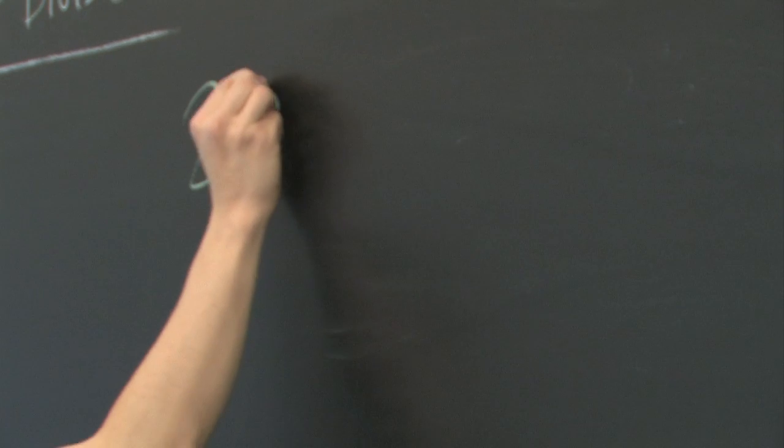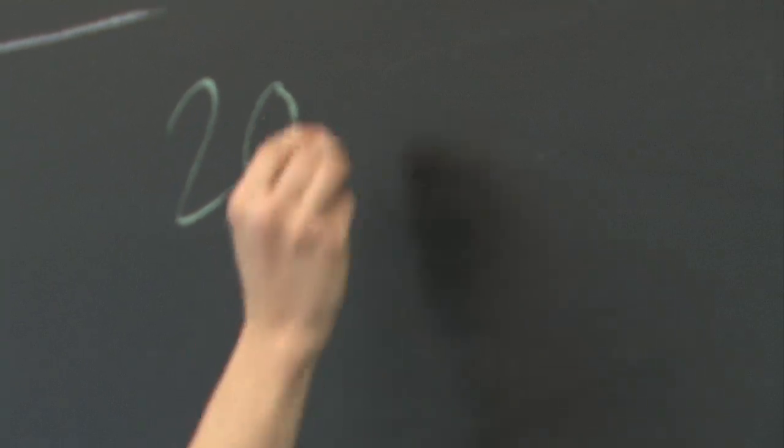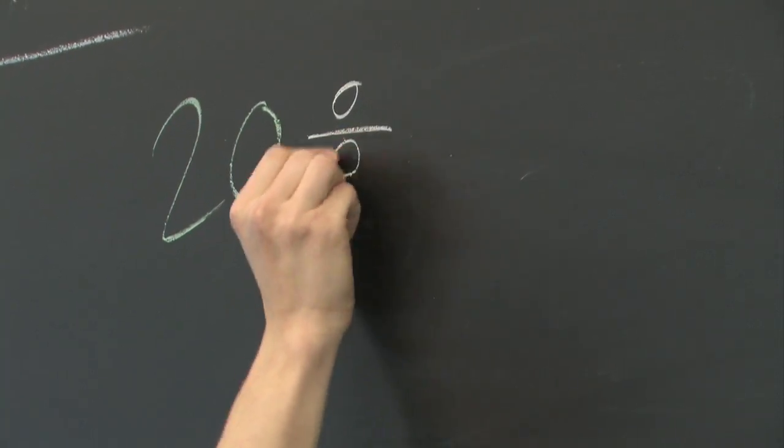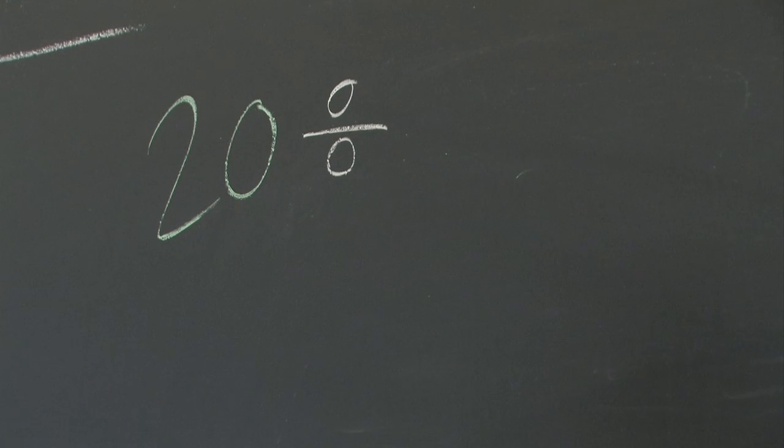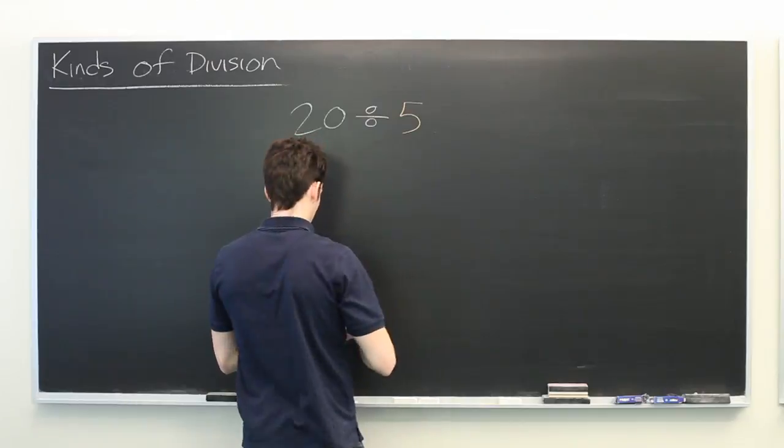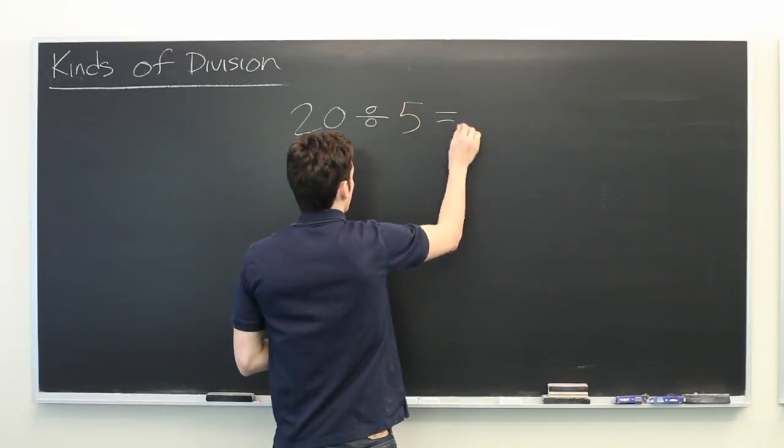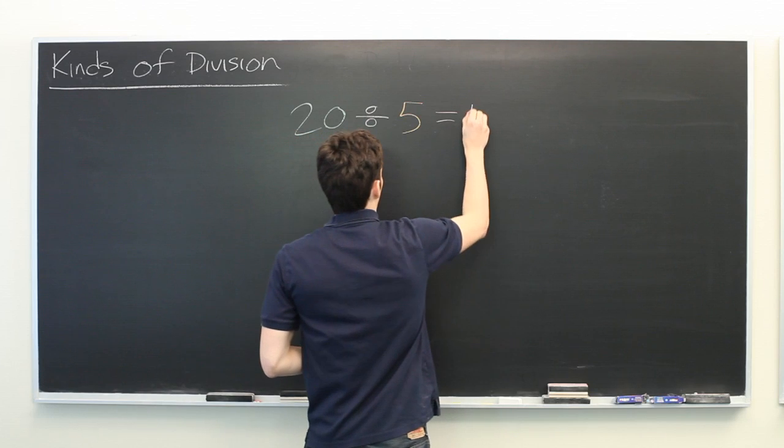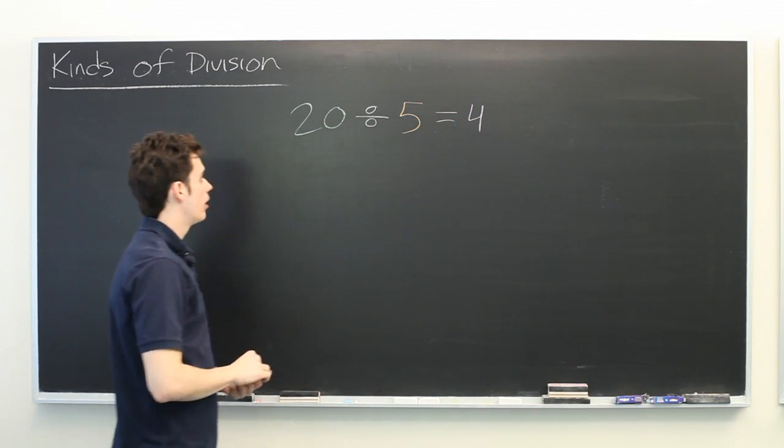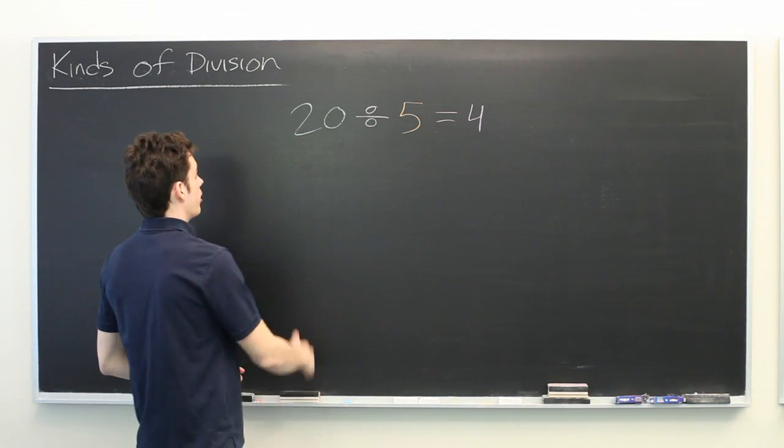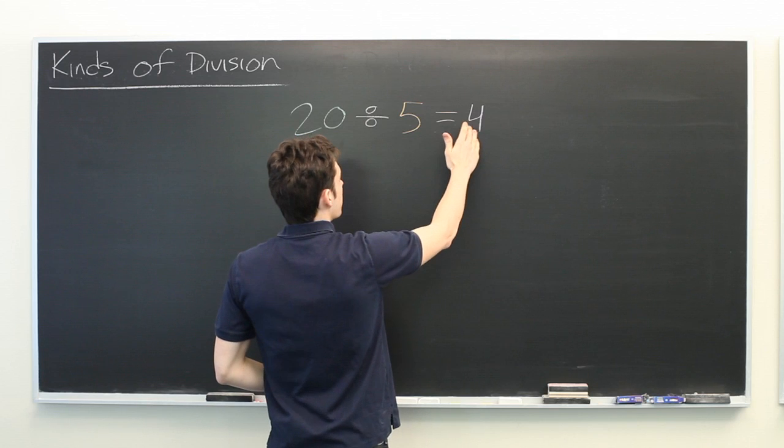Here's one example. We'll get twenty divided by five, which of course is equal to four. Here we simply read the problem from left to right. Twenty divided by five is four.